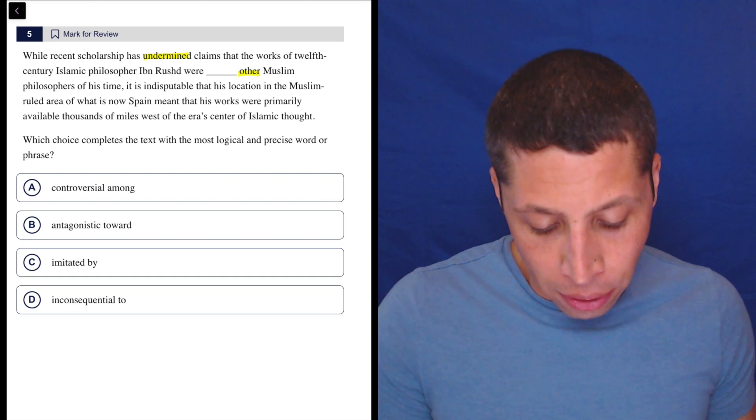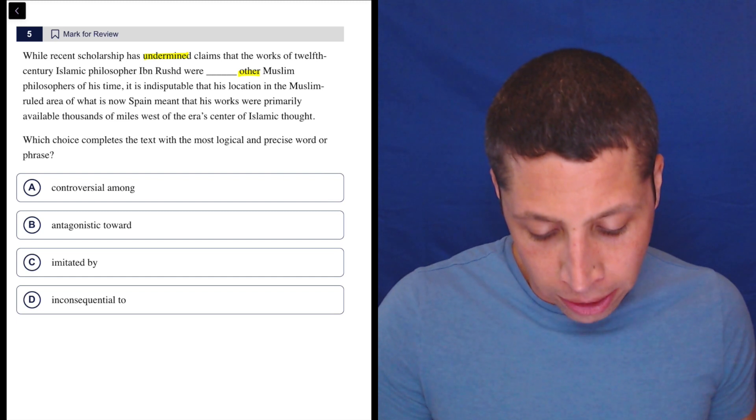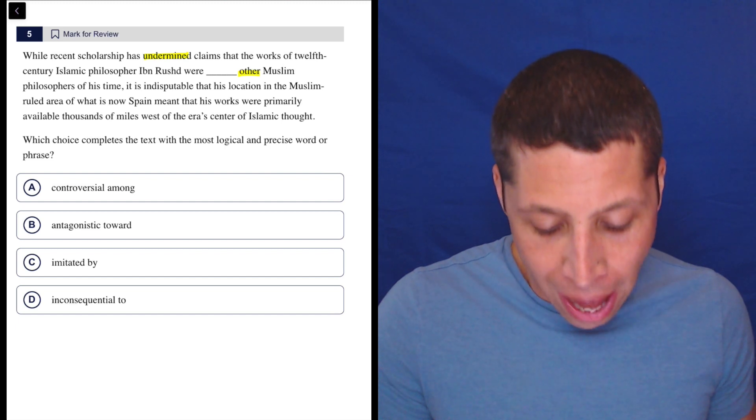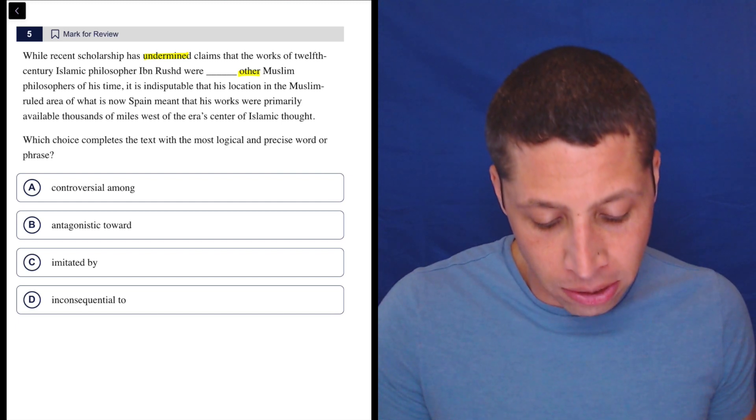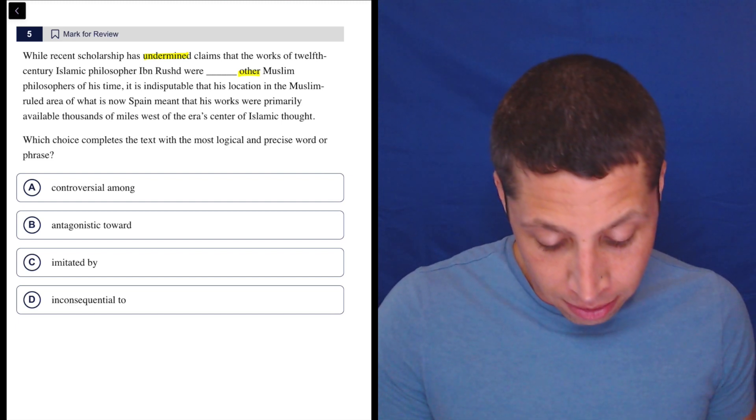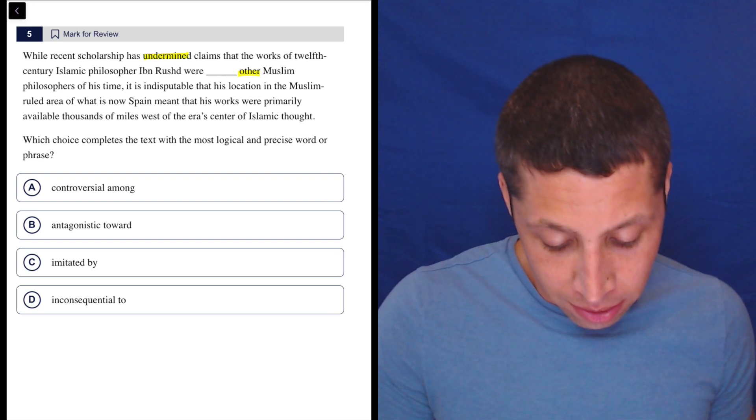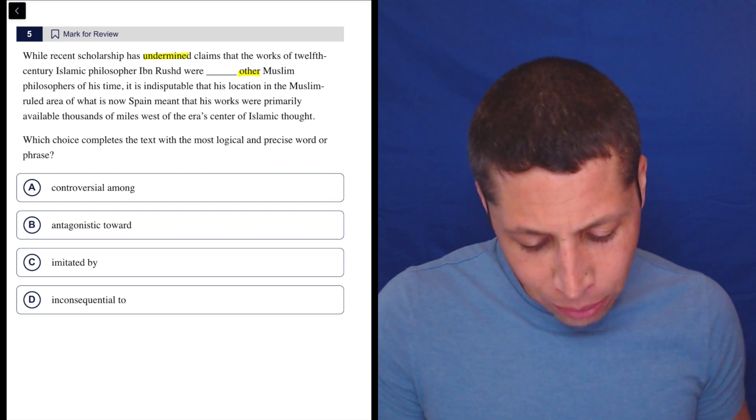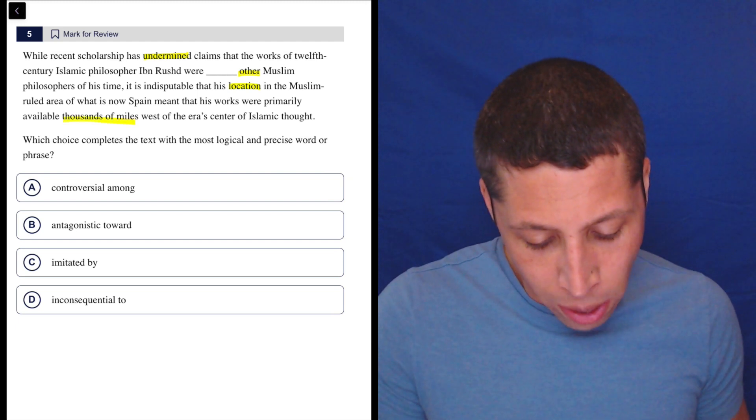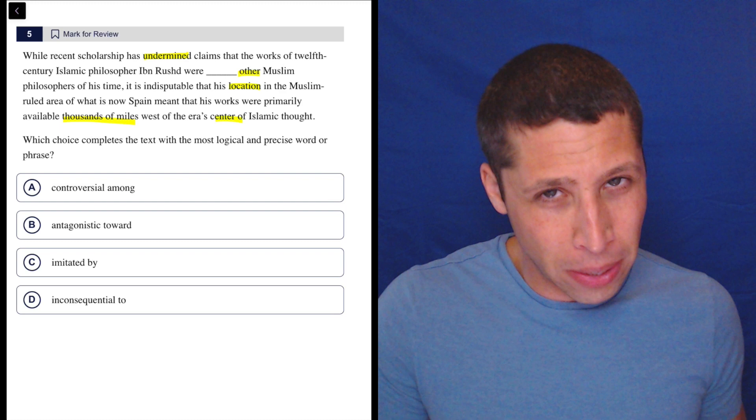It is indisputable that his location in the Muslim ruled area of what is now Spain meant that his works were primarily available thousands of miles west of the era's center of Islamic thought. Okay, so his location matters, right? So he's thousands of miles away from something important.